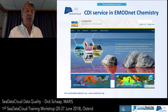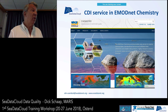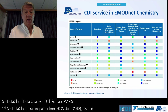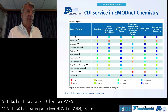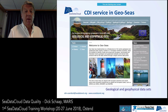Another example is EMODnet Chemistry. I already told you about the importance of the Marine Strategy Framework. EMODnet Chemistry focuses on eutrophication, contaminants, and marine litter. The data is quite complicated, and vocabularies are enormously important because we have tens of thousands of different chemical terms that all have to be identified, worked with, and harmonized into common parameters with common units. Here you see a dynamic matrix showing the availability of data in sea areas by different chemical groups.